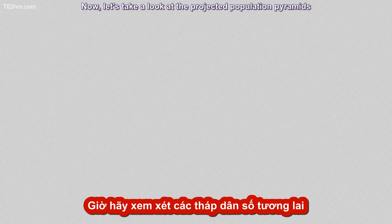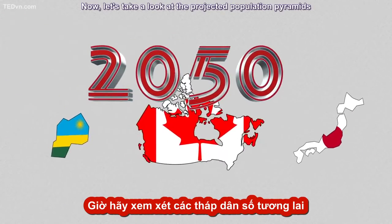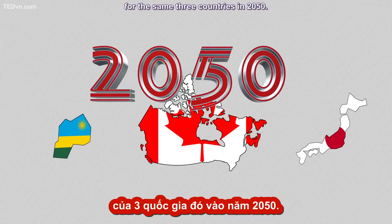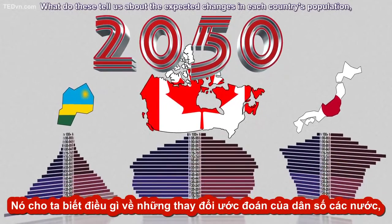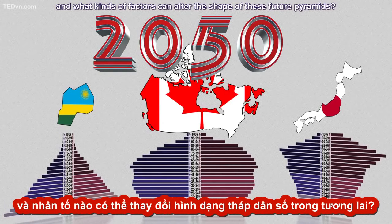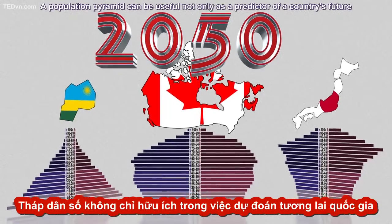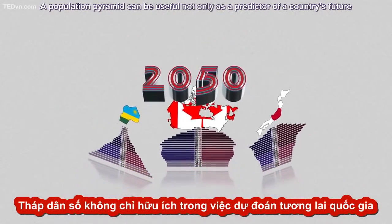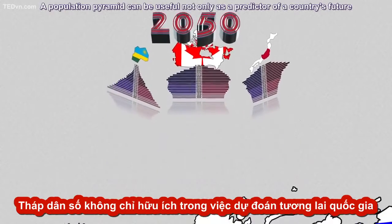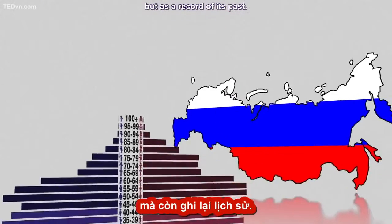Now let's take a look at the projected population pyramids for the same three countries in 2050. What do these tell us about the expected changes in each country's population? And what kinds of factors can alter the shape of these future pyramids? A population pyramid can be useful not only as a predictor of a country's future, but as a record of its past.